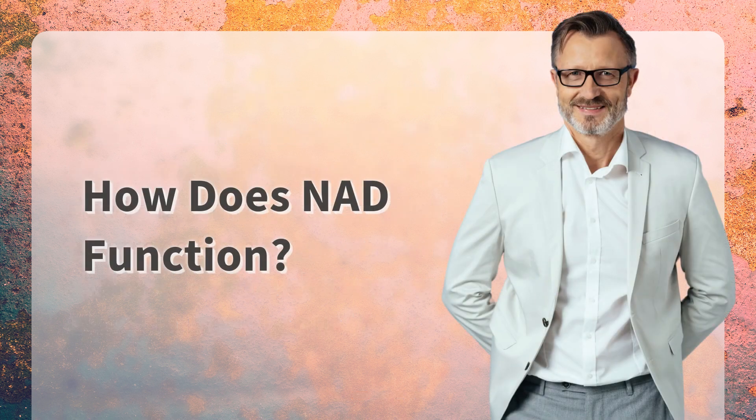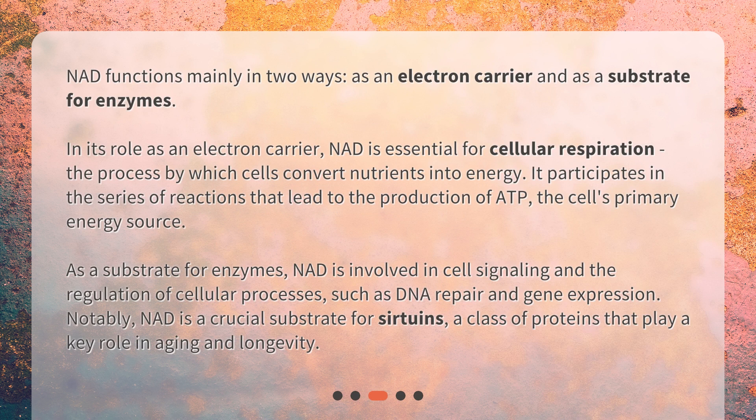How does NAD function? NAD functions mainly in two ways: as an electron carrier and as a substrate for enzymes. In its role as an electron carrier, NAD is essential for cellular respiration — the process by which cells convert nutrients into energy. It participates in the series of reactions that lead to the production of ATP, the cell's primary energy source.